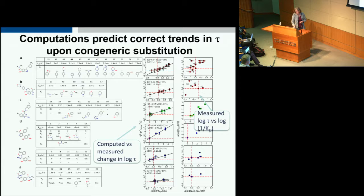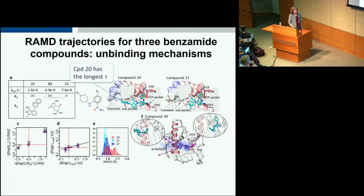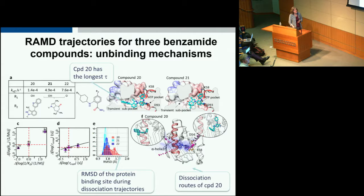We can also get mechanistic information from the trajectories. For three structures with different residence times and different on- and off-rates, the slowest unbinding compound shows more variation in protein structure upon unbinding because it has more than one exit route, whereas faster-dissociating compounds exit via a single route. Different mechanisms of exit are related to whether the ligand needs to distort, and we can identify charge interactions important for residence time.